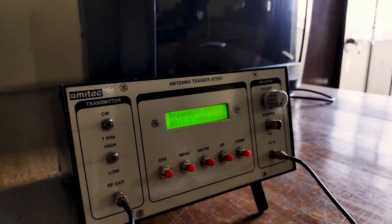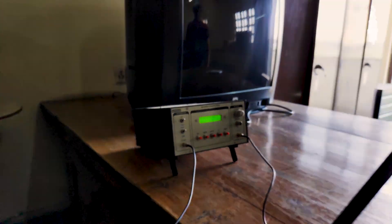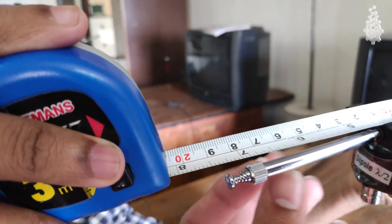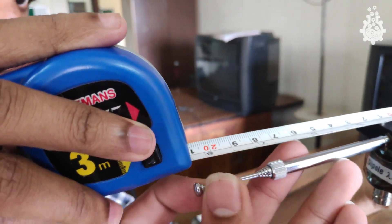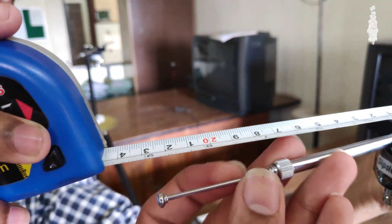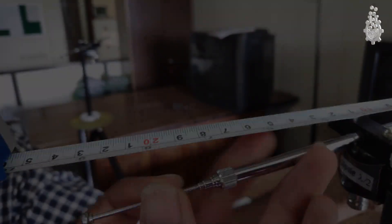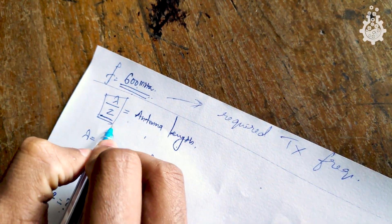which basically shows how powerful the received signal is on the receiver side. Here we are going to use a variable length antenna, but we do have a fixed frequency at which we will perform this experiment. The fixed frequency is 600 megahertz.